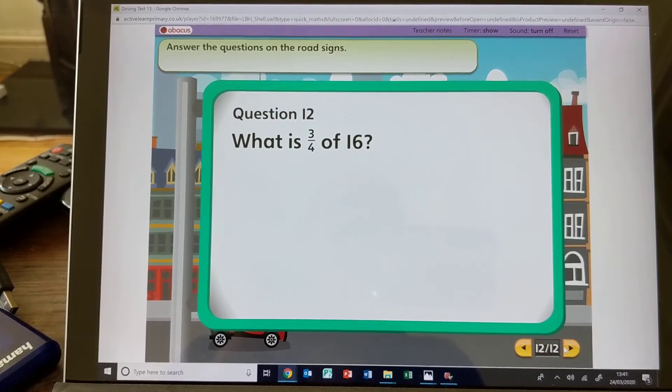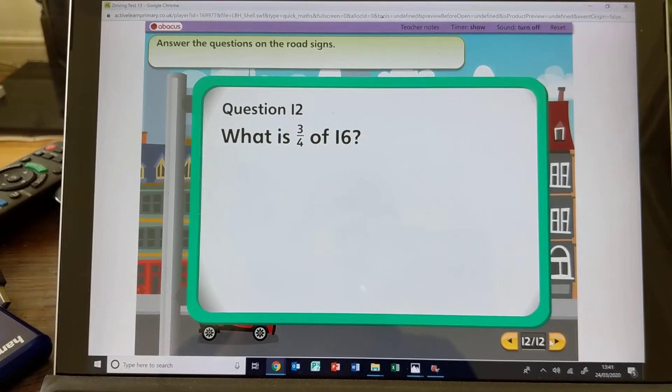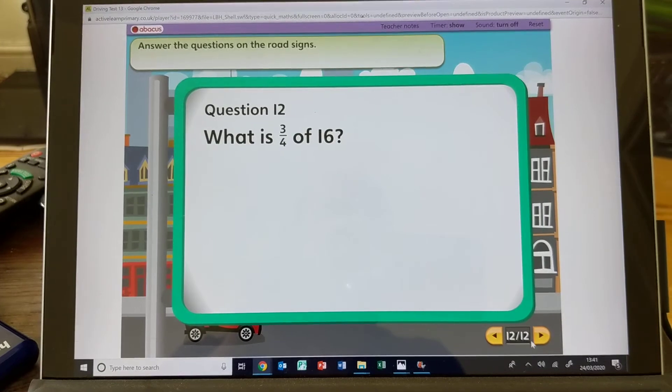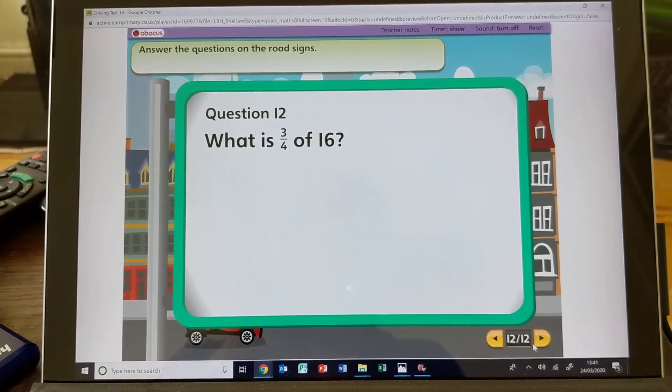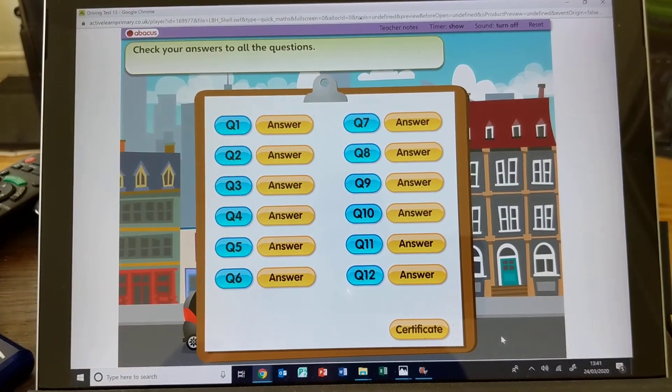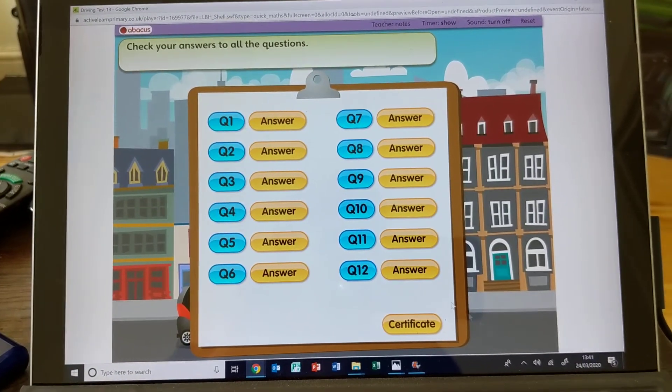So find out what 1/4 is, what times 4 is 16, and then times that by 3. Right, now get yourself a colored pencil out and we'll mark the answers.